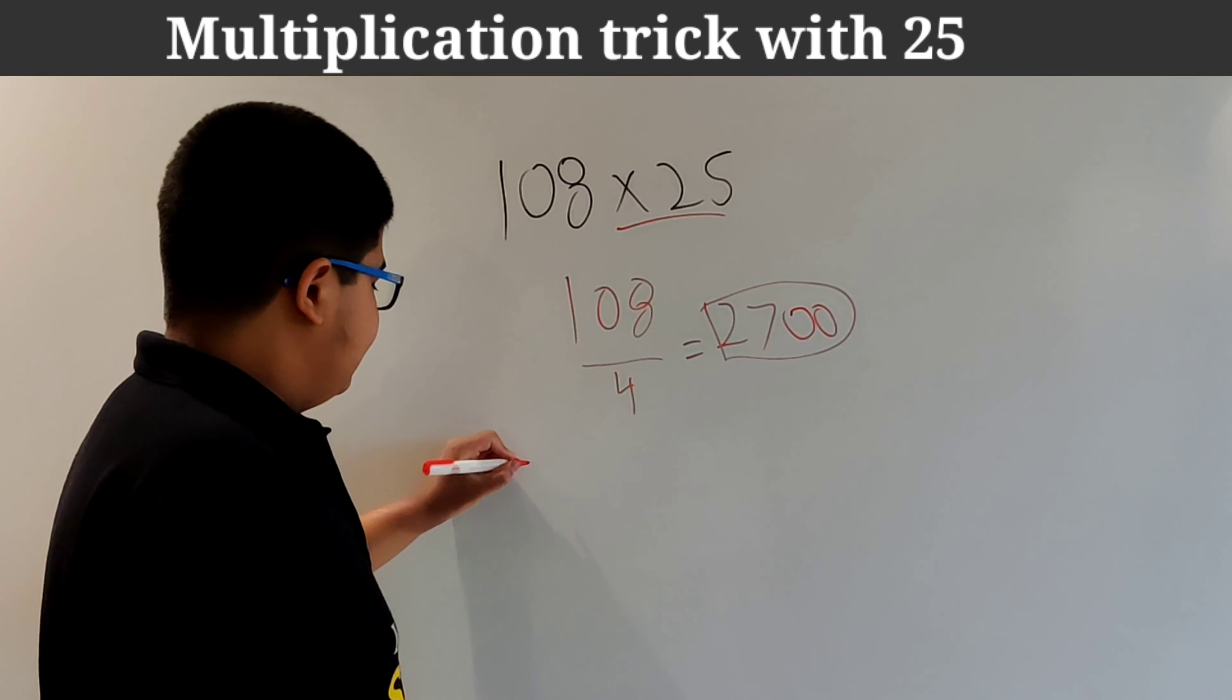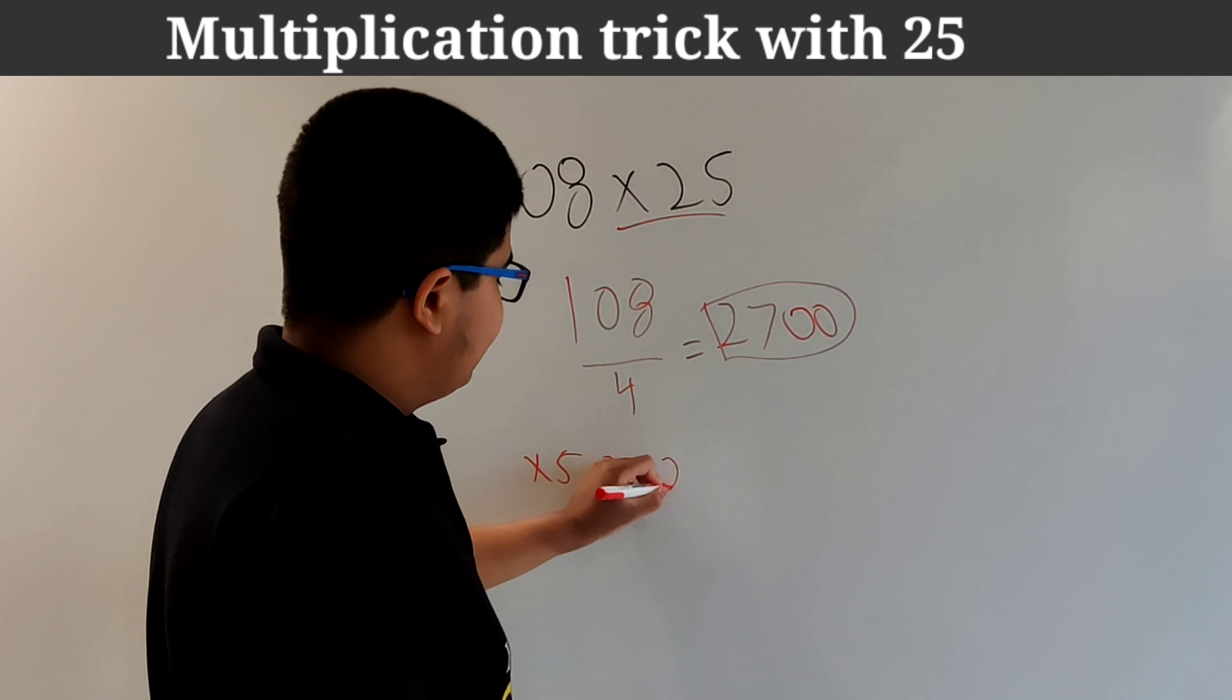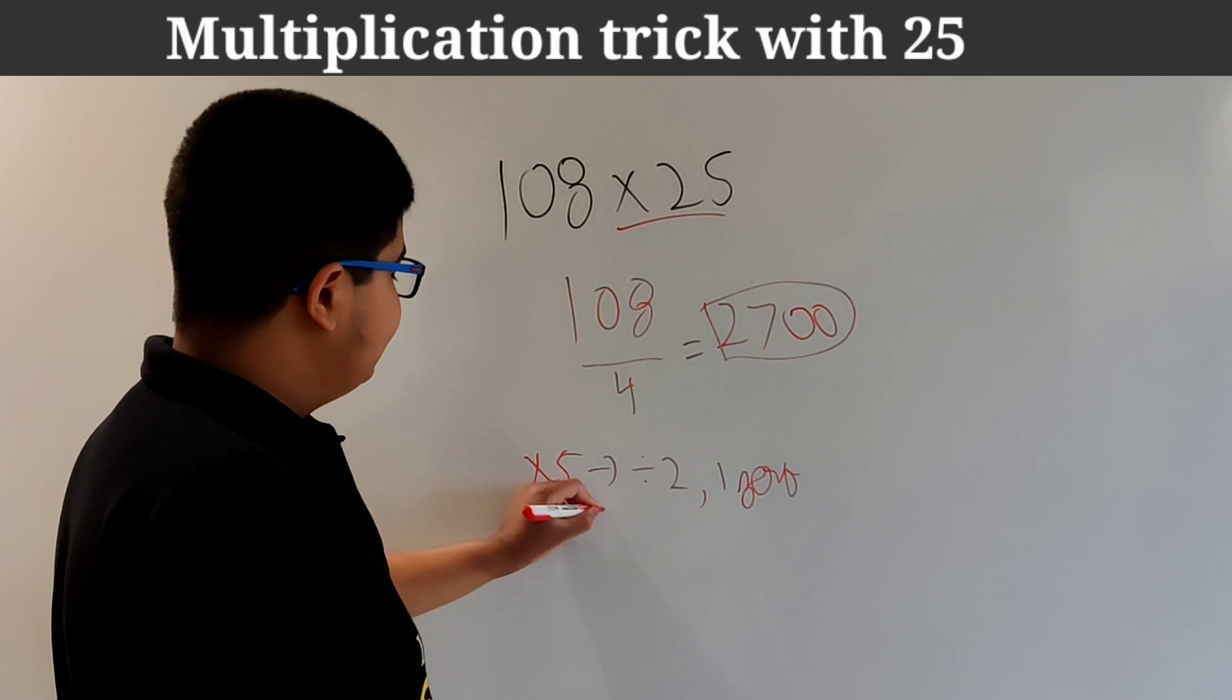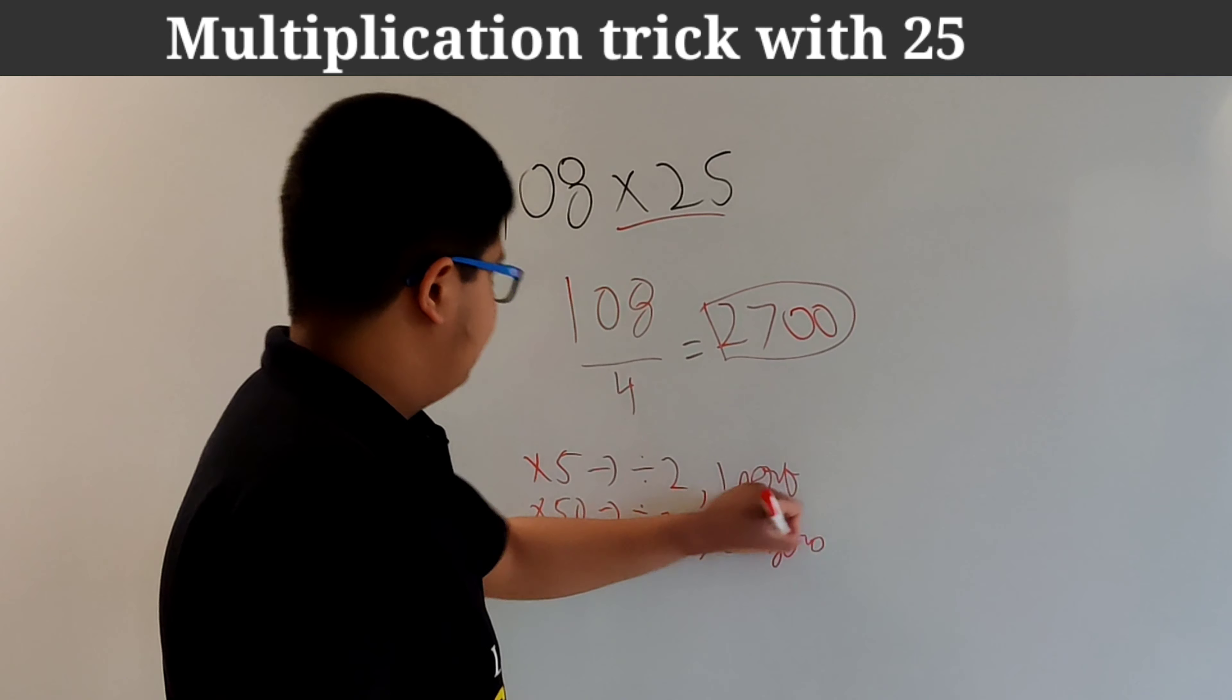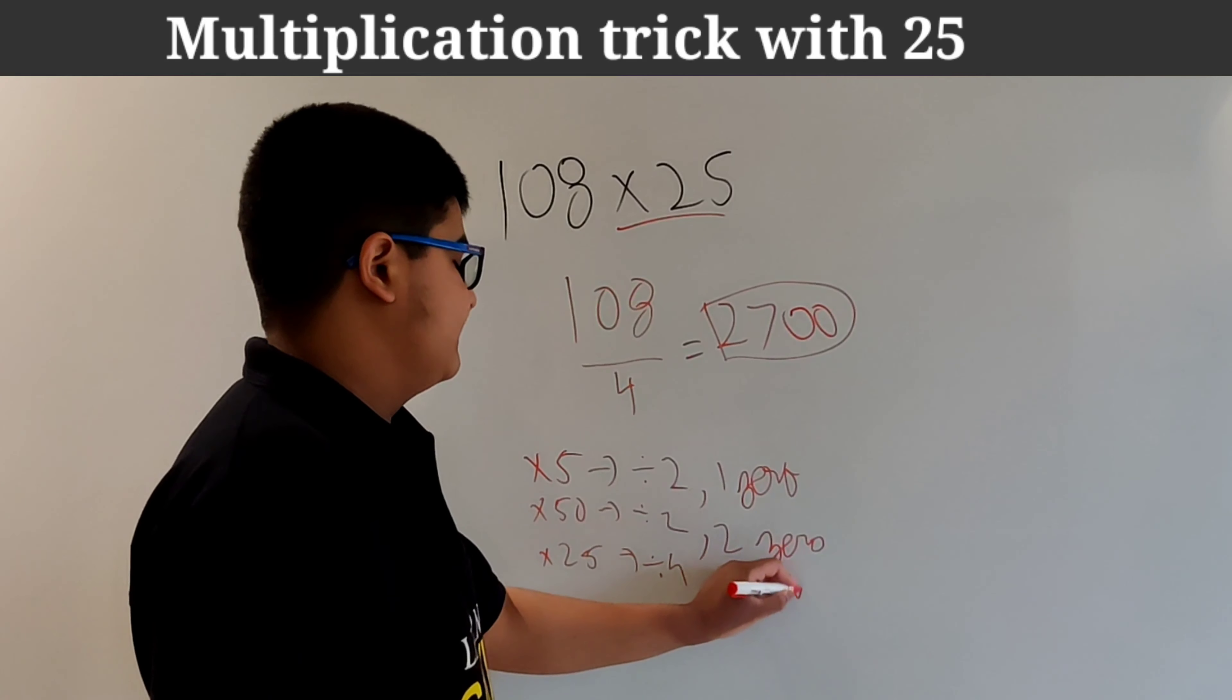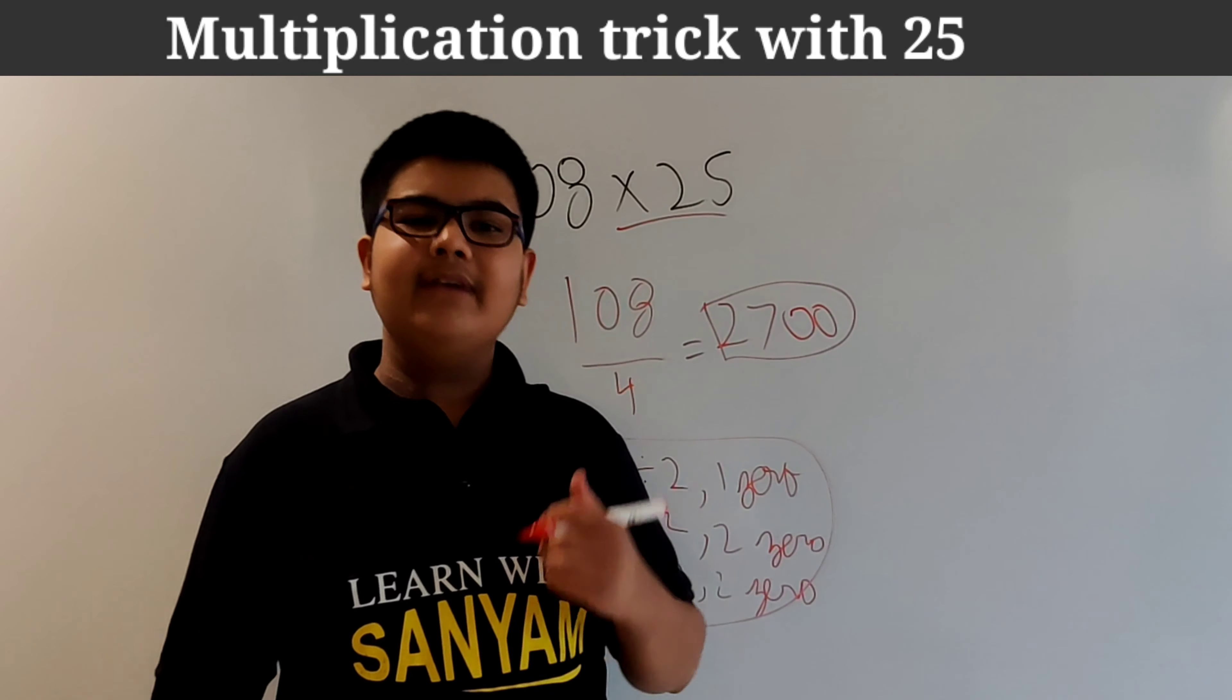So to summarize, in multiplication with 5 we will divide the number by 2 and put 1 zero. In multiplication with 50 we divide the number by 2 but put 2 zeros. And in multiplication with 25 we divide the number by 4 and put 2 zeros. So remember this trick and you will be able to multiply any number by 5, 25 and 50.